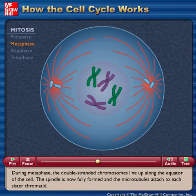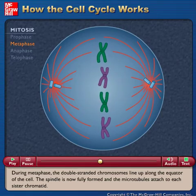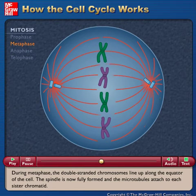During metaphase, the double-stranded chromosomes line up along the equator of the cell. The spindle is now fully formed and the microtubules attach to each sister chromatid.